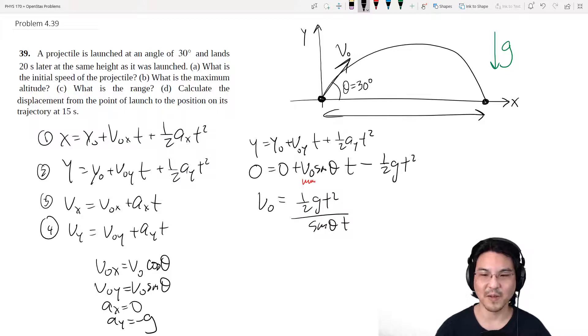Okay, oh, I can write that nicer, maybe. Just T squared over T, and then the two goes in the denominator. So there we go. That's part A, initial speed.